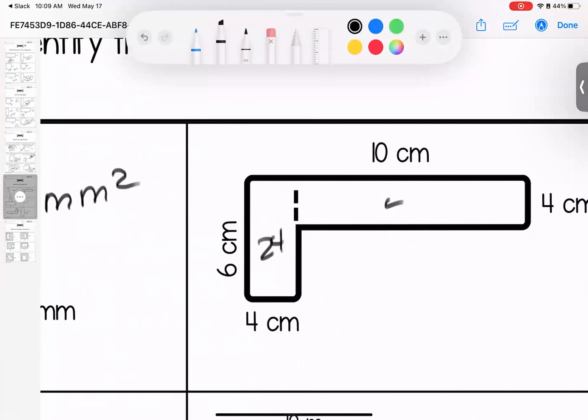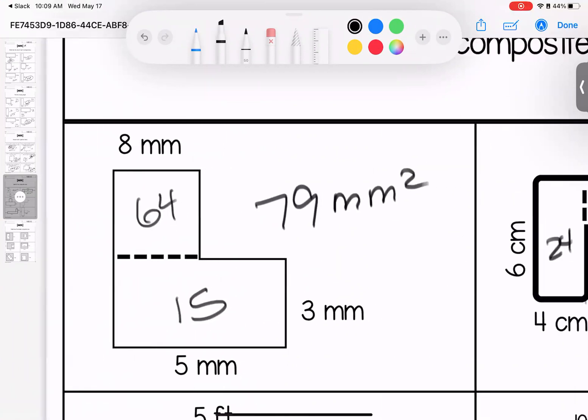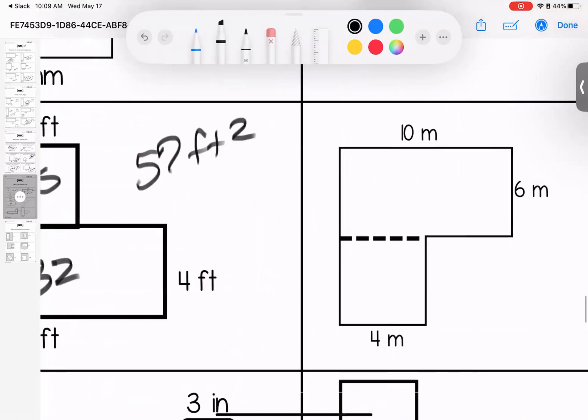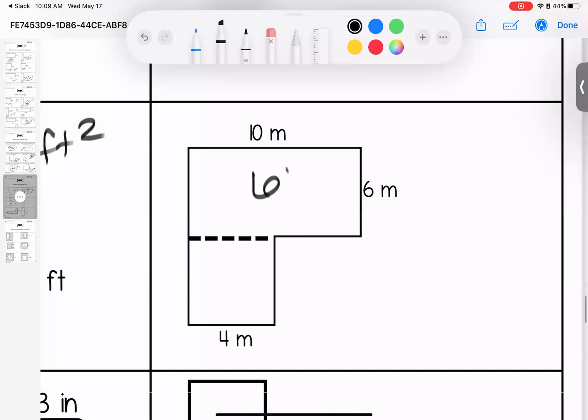Coming down here, 5 and 5 is 25, 8 and 4 is 32, for a total of 57 feet squared. 10 and 6 is 60, 4 and 4 is 16, for a total of 76 meters squared.